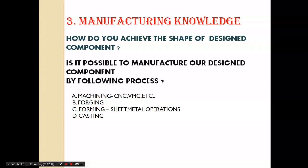The third factor is manufacturing knowledge — it is the most important factor. A design engineer must understand how to achieve the shape of a designed product or component created in 3D software. While designing a product in software, we must consider whether it is practically possible to manufacture. We must also consider which machines are available in the industry to manufacture the product. Some manufacturing types include CNC, VMC, forging, sheet metal forming operations, and casting.